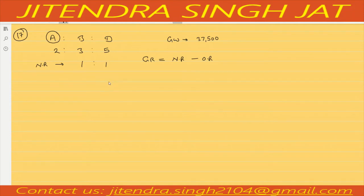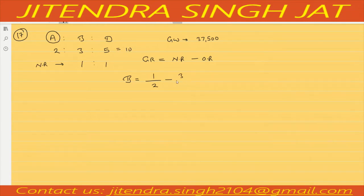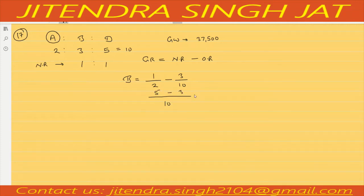Let's calculate first for B, means Bimal. The new ratio of Bimal was 1/2. The old ratio of Bimal was 3/10. Taking LCM of 10: 5 minus 3 equals 2/10. It means Bimal is gaining.